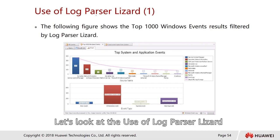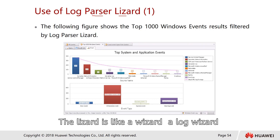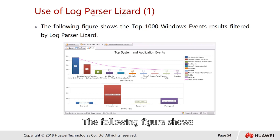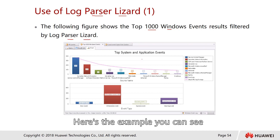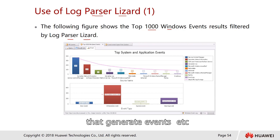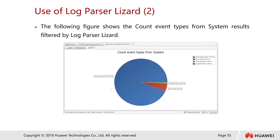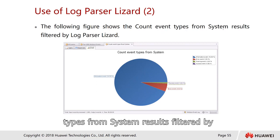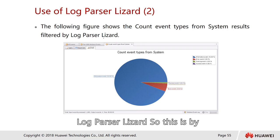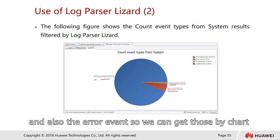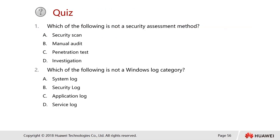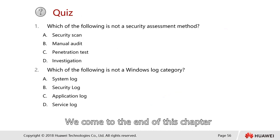The following figure shows the top 1000 Windows events filtered by Log Parser Lizard — categorized by what kind of service generated the event. Another figure shows event types from the system, categorized by chart: information events, successful events, and error events. This visualization makes it easier to analyze large volumes of log data.